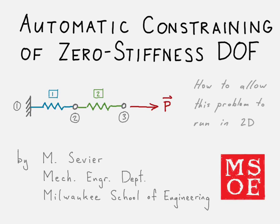Here we're taking a look at how zero stiffness degrees of freedom are removed so that a problem can be solved. In this case, we have an example of a one-dimensional problem — two springs in series — that takes place in two-dimensional space. How does this get solved?